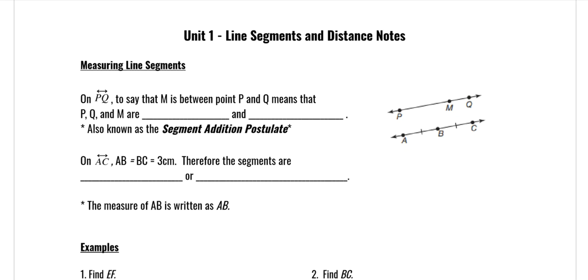So first we're going to talk about measuring line segments. On line PQ, to say that M is between points P and Q means that P, Q, and M are collinear. In other words, they're all going to be on the same line. And the picture's right here if you have trouble seeing it, so M is between P and Q. That doesn't necessarily mean that M is right there, it just means that it's somewhere in between this line. This is a visualization, so it's not actually drawn to scale.